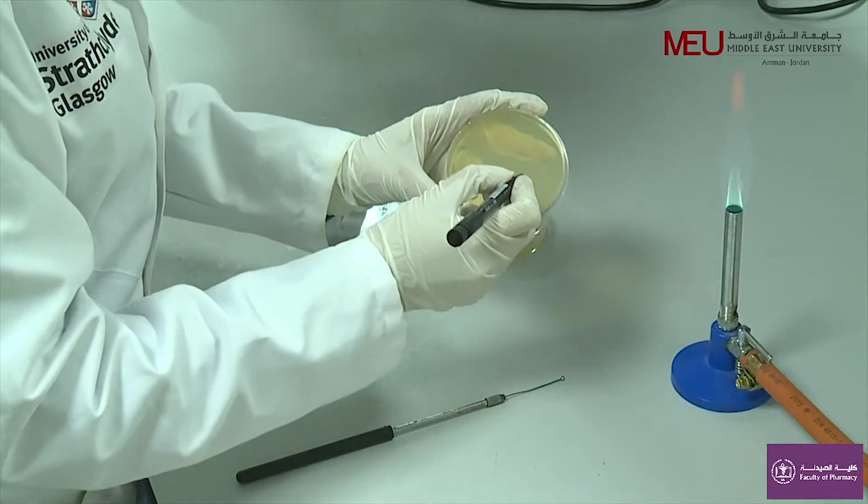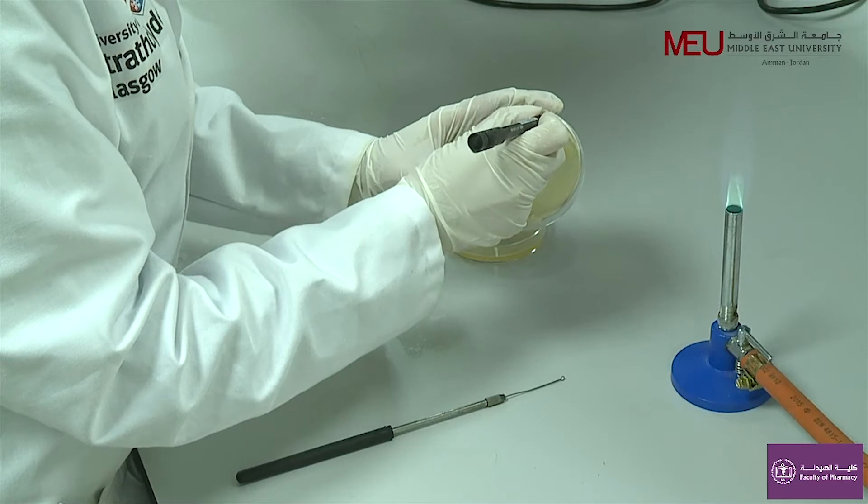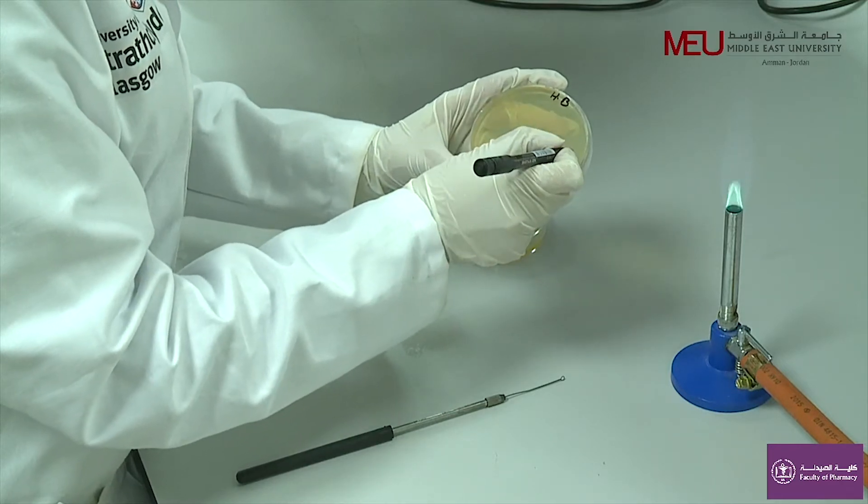Use the marking pen to label the bottom surface of the sterile petri dish with your name, initials, date, and sample of the original inoculum used.